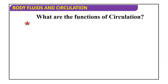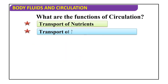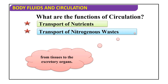The functions of circulation include transport of nutrients from the gut to the tissues. As we studied in the absorption chapter, nutrients get absorbed from the small intestine directly into blood and are then transported to the cells and tissues. Circulation also handles transport of nitrogenous waste from the tissues to the excretory organs. When cells utilize oxygen and nutrients, they produce excretory products — nitrogenous waste — and blood carries these from tissues to excretory organs like the kidneys.